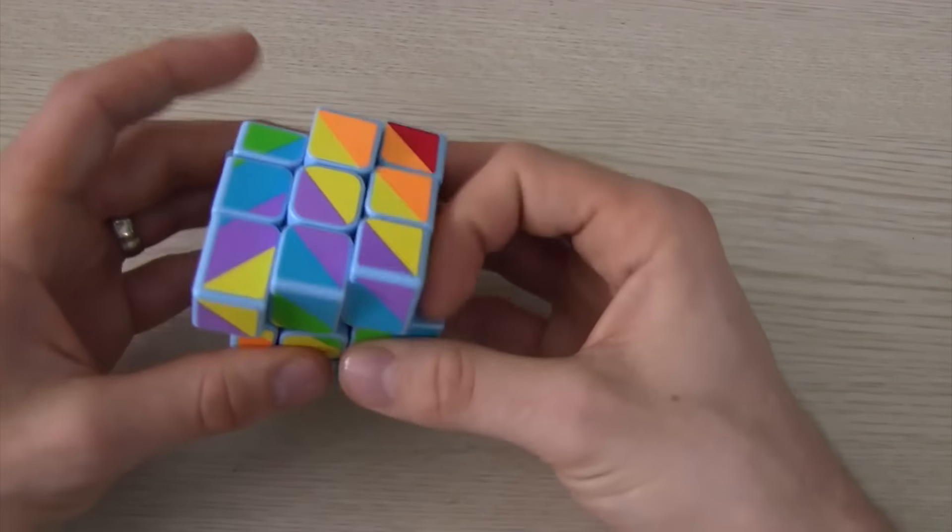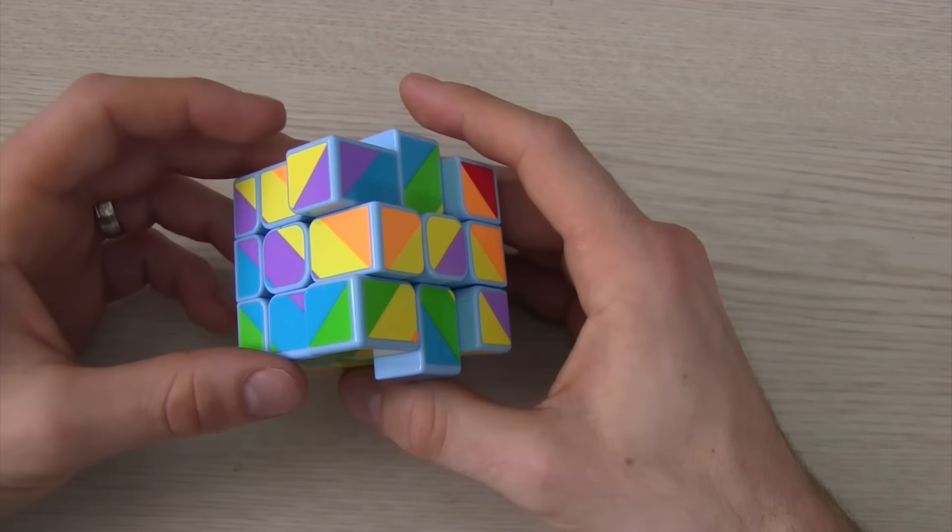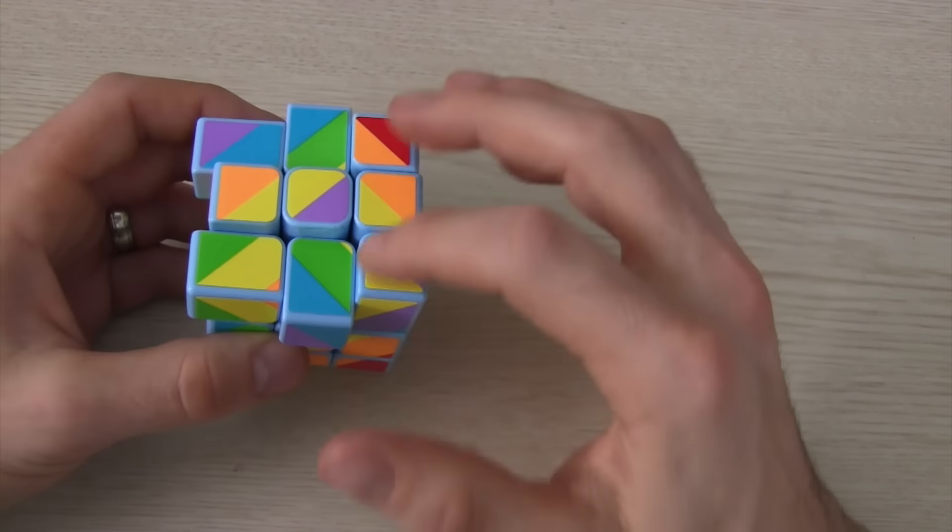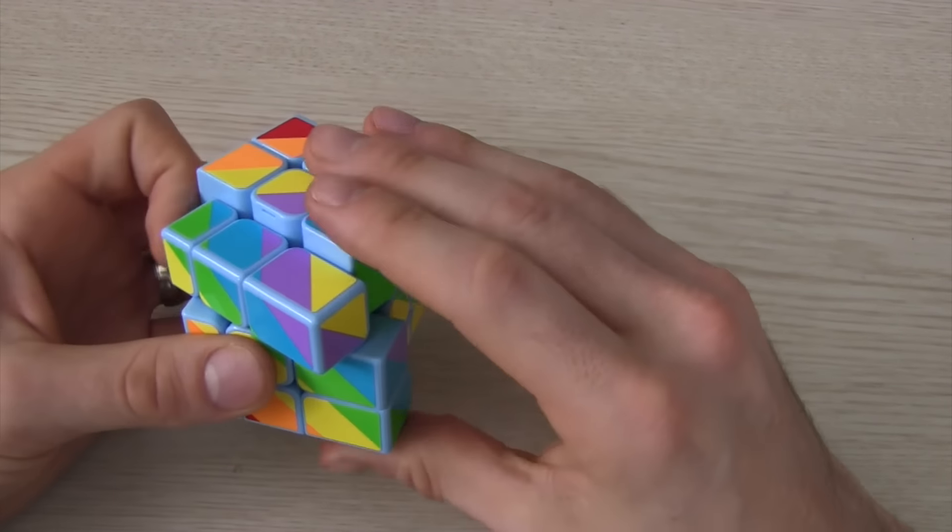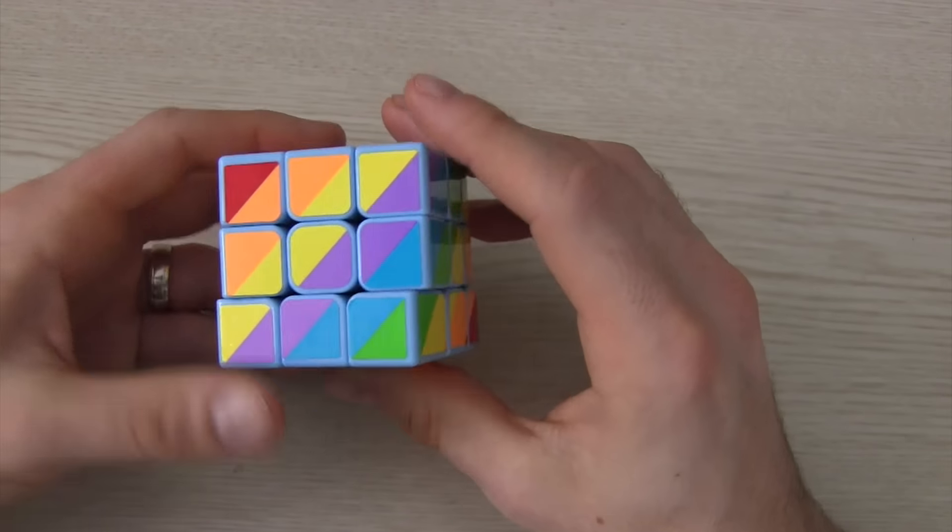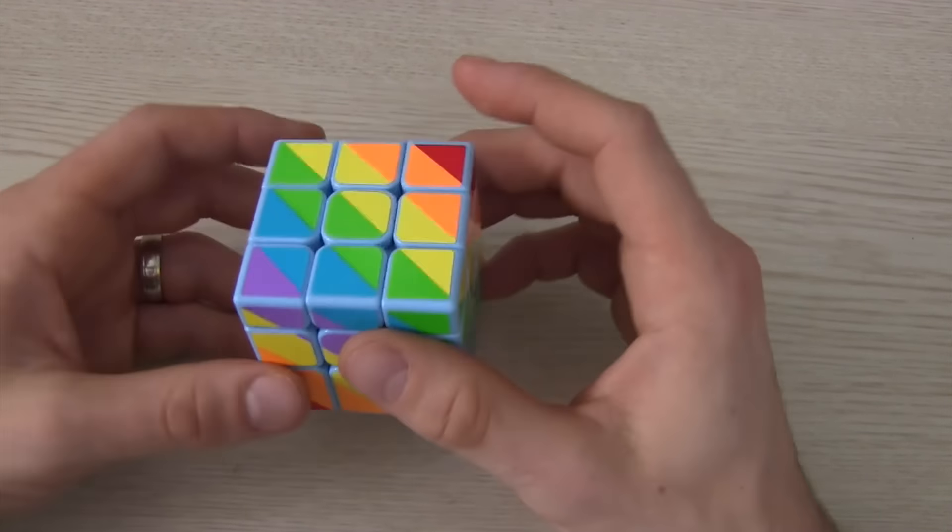Now, doing something like OLL or PLL is really easy with this as well. So I can see what OLL this is, and it's much easier to solve than what you might expect from just crazy colors all over the place.